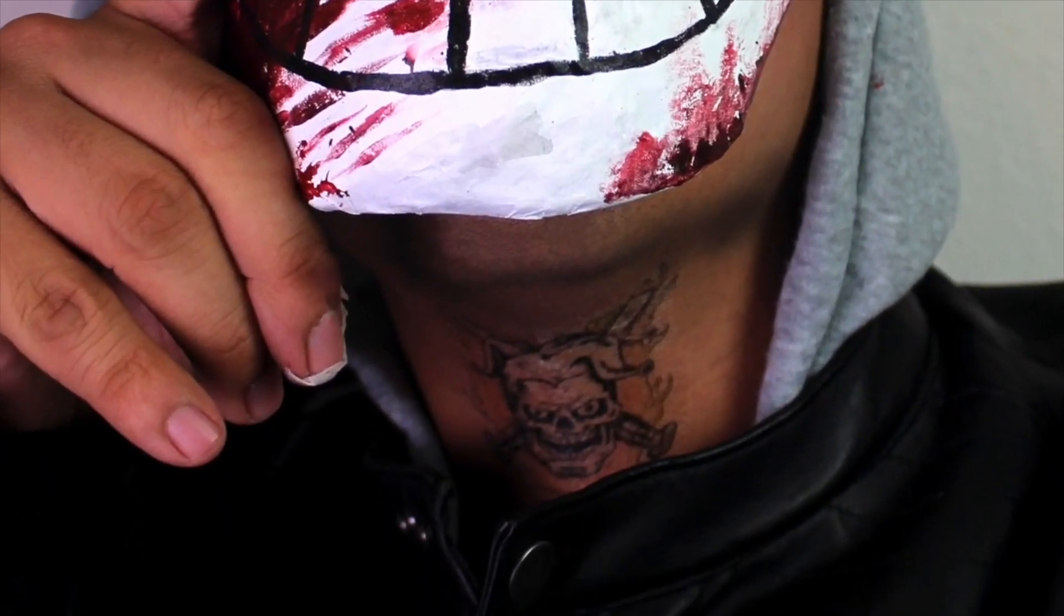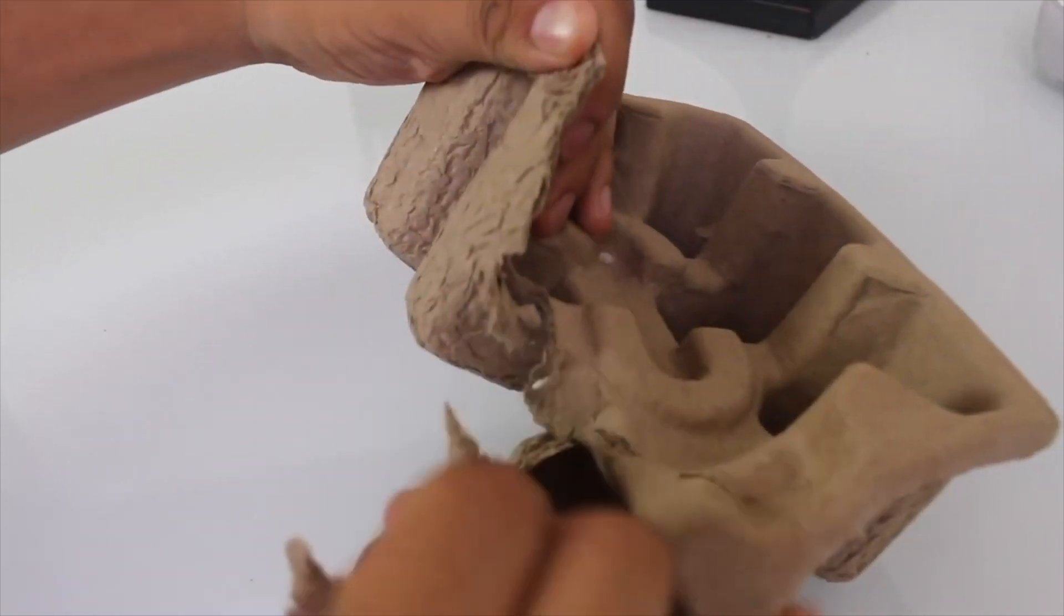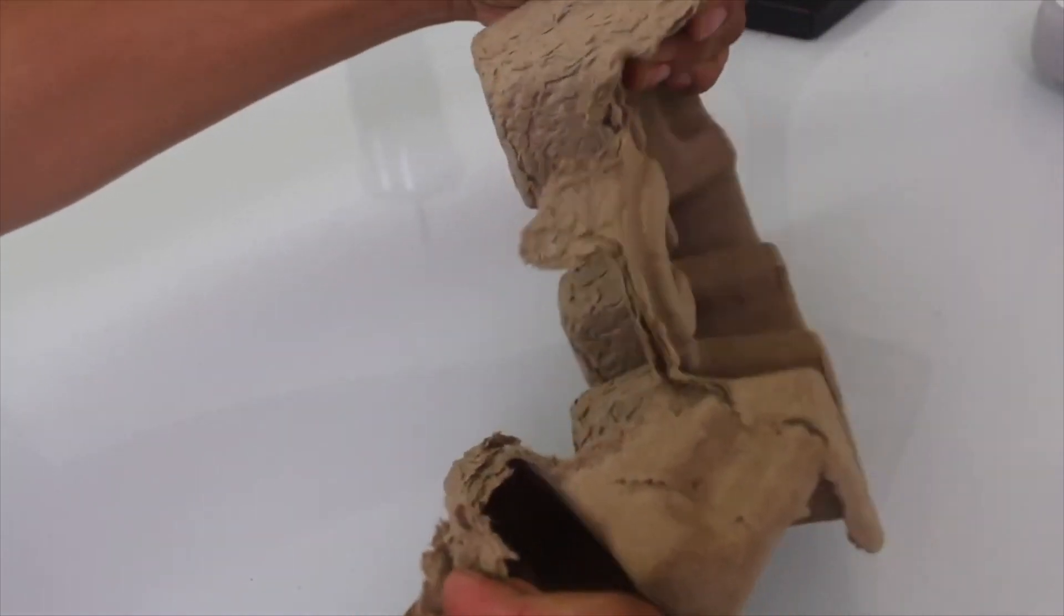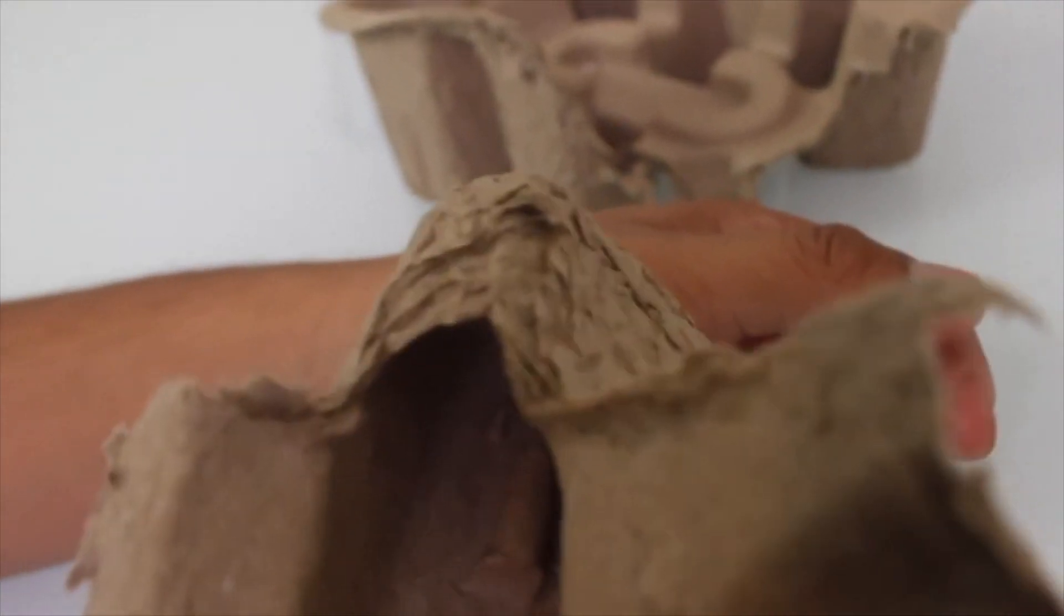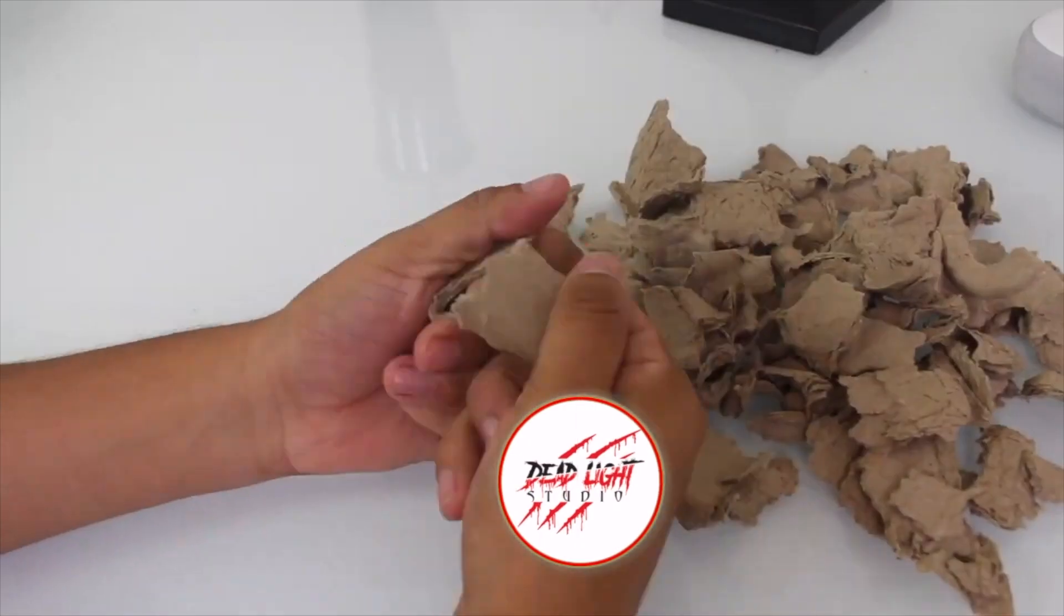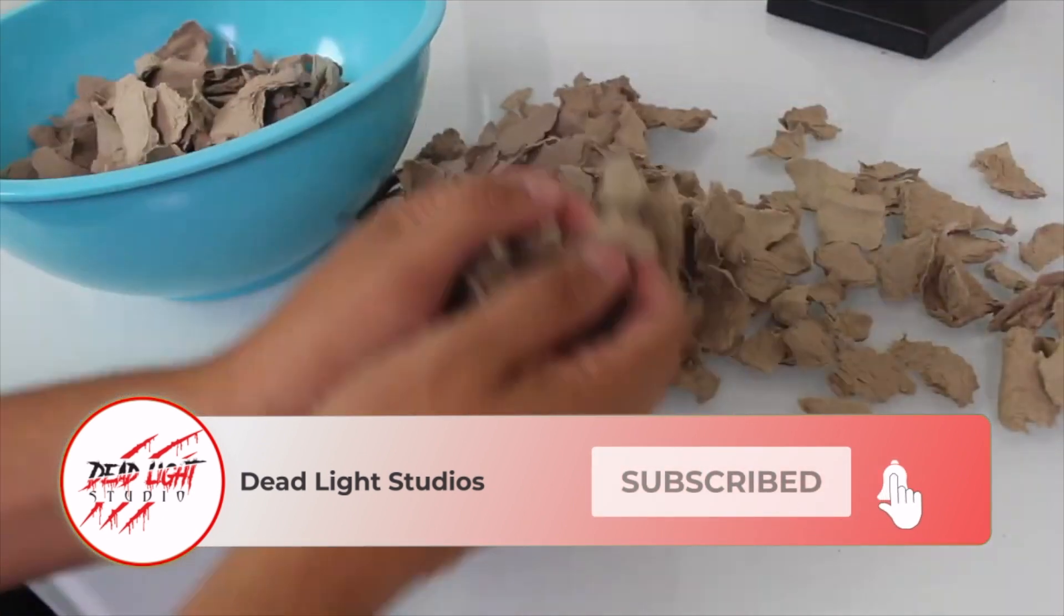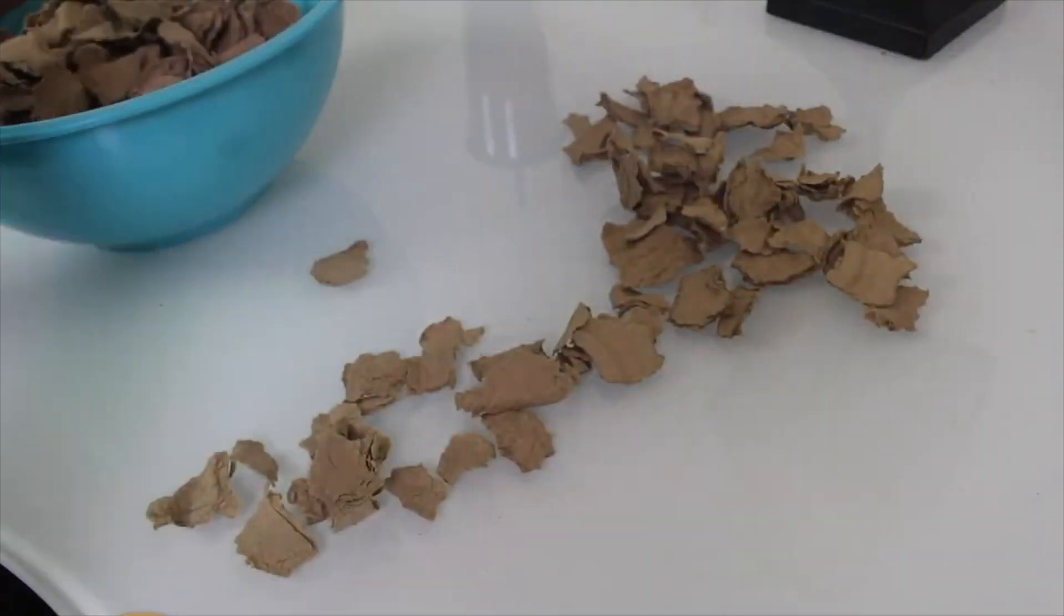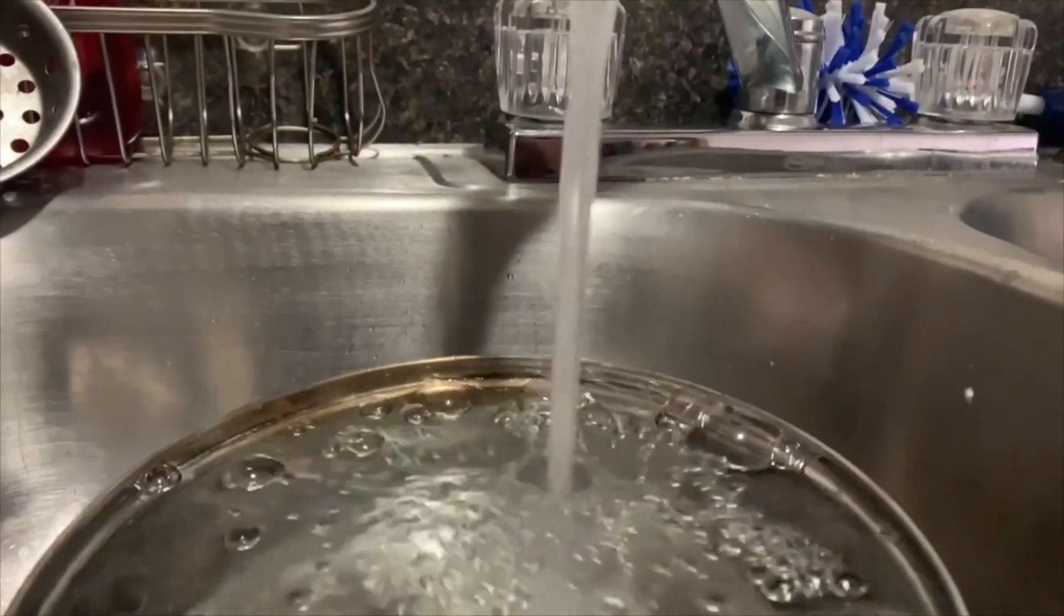I am starting off by ripping up the pressed cardboard into small tiny threads. Rip it by hand to get the tiny fibers to stick out. Once the cardboard is torn up, place it into a bowl. This will be the base of the Legion mask.